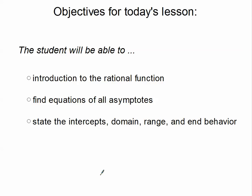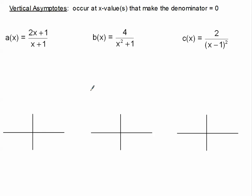In this second tutorial, we will be finding the equations of the vertical asymptotes, and we will be stating the intercepts, the domain, the range, and the end behavior. So if you'd please flip over to these three examples in our notes, we're talking about vertical asymptotes with these equations.